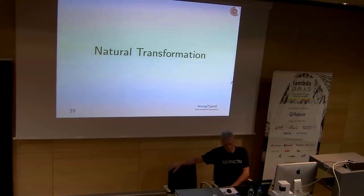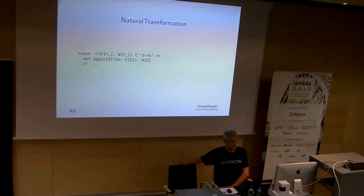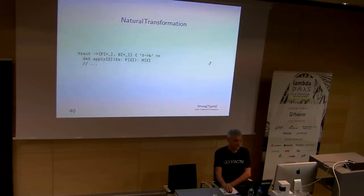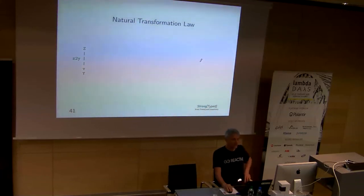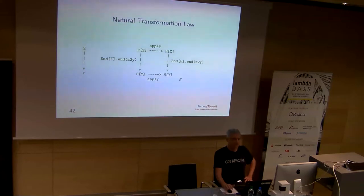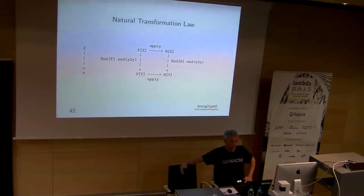Next step: natural transformations. A natural transformation is for type constructors what a function is for data. A natural transformation is applied to a value of type F[Z], independently of Z, to produce an H[Z]. It's very independent of the underlying type Z — if you have any function from Z to Y, it doesn't matter whether you first do the natural transformation and then lift it, or first lift it and then do the natural transformation. Our meanings will be natural transformations from syntax to semantics.